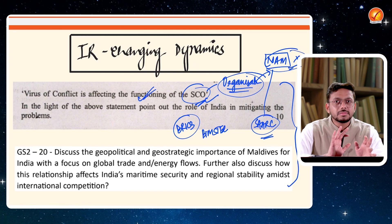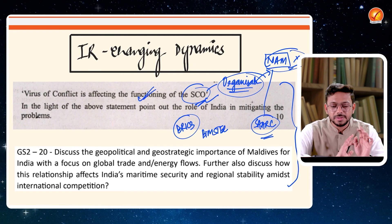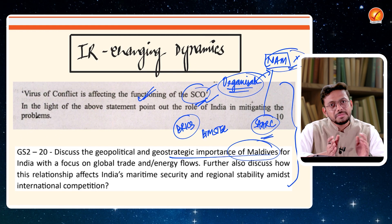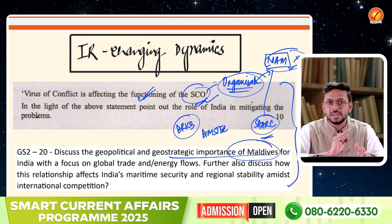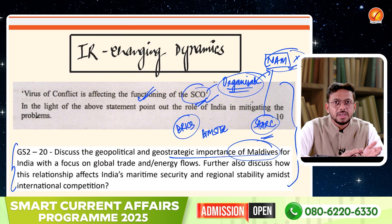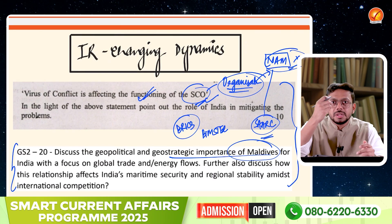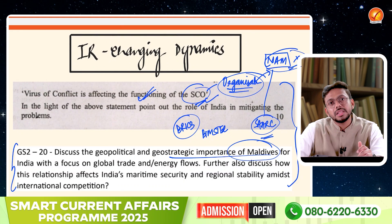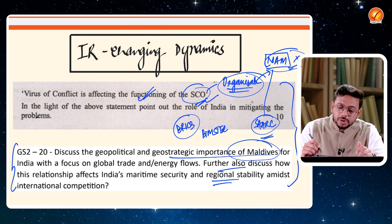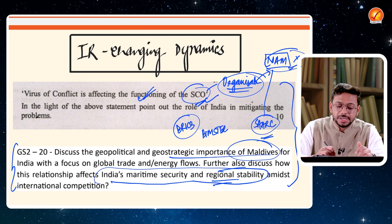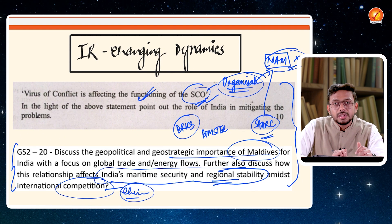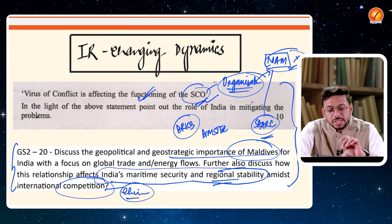A question on the geostrategic importance of Maldives came because Maldives was recently in news and India-Maldives relations were strained. The question asks: what is the importance of Maldives? What is the dependence of Maldives on India and of India on Maldives in the Indian Ocean region? How is it important for India's maritime security and regional stability? International competition — competition from China — makes this topic current. That is why these questions are asked.